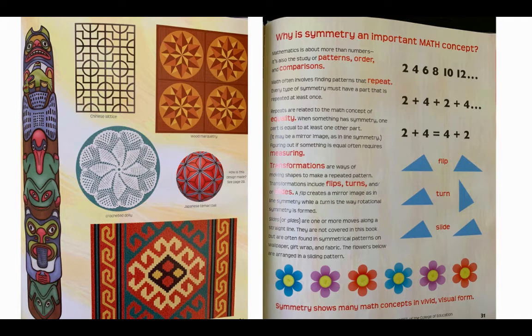Transformations are ways of moving shapes to make a repeated pattern. Transformations include flips, turns, and slides. A flip creates a mirror image, as in line symmetry, while a turn is how rotational symmetry is formed. Slides or glides are one or more moves along a straight line. They're not covered in this book, but are often found in symmetrical patterns on wallpaper, gift wrap, and fabric. The flowers below are arranged in a sliding pattern. Symmetry shows many math concepts in vivid visual form.